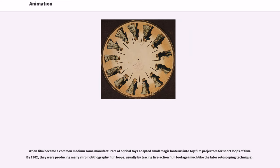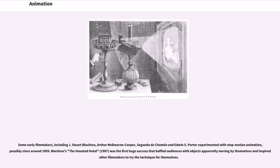When film became a common medium, some manufacturers of optical toys adapted small magic lanterns into toy film projectors for short loops of film. By 1902, they were producing many chromolithography film loops, usually by tracing live-action film footage, much like the later rotoscoping technique. Some early filmmakers, including J. Stewart Blackton, Arthur Melbourne Cooper, Segundo de Chomón, and Edwin S. Porter, experimented with stop-motion animation, possibly since around 1899.